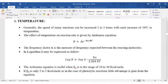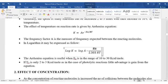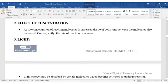First, when we increase the temperature, the reaction rate increases 2 to 3 times with each increase of 10 degrees Celsius in temperature. This effect is usually given by Arrhenius equation. The frequency factor A is the measure of frequency expected between the reacting molecules. In logarithm it may be expressed as log K equals log A minus Ea divided by 2.303 RT. The Arrhenius equation is useful when Ea is in the range of 10 to 30 kilocalories per mole. If Ea is only 2 to 3 kilocalories per mole, like in photolytic reactions, little advantage is gained from the equation.